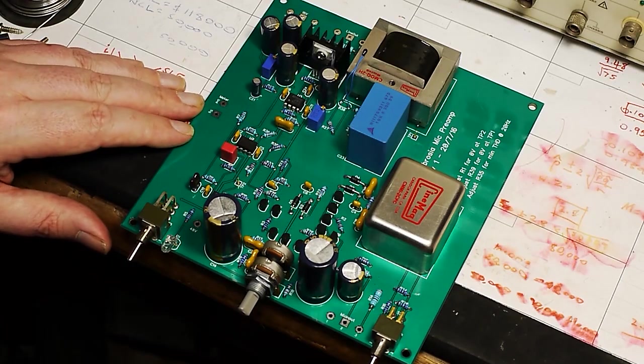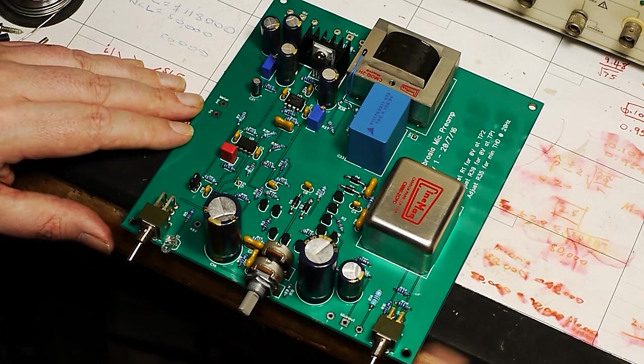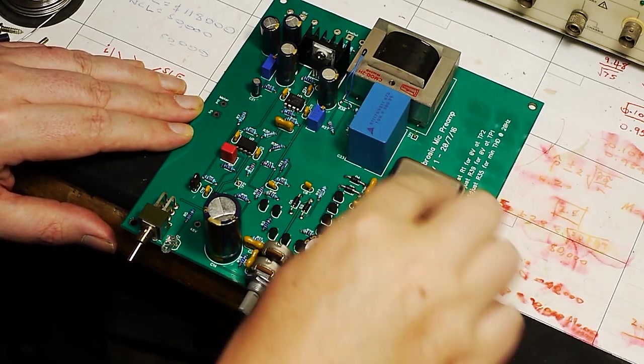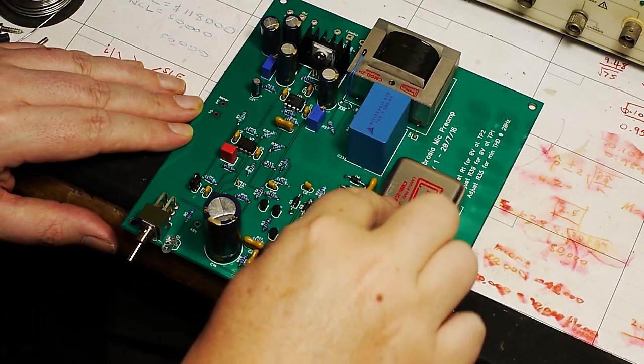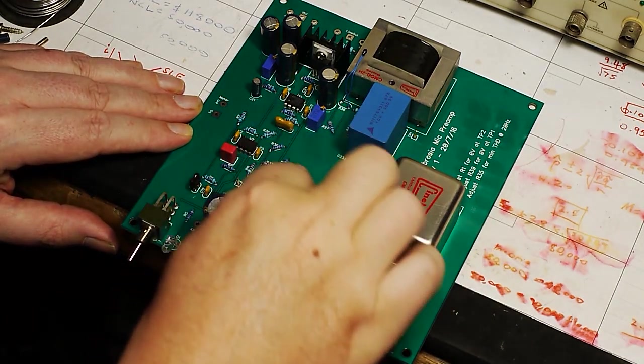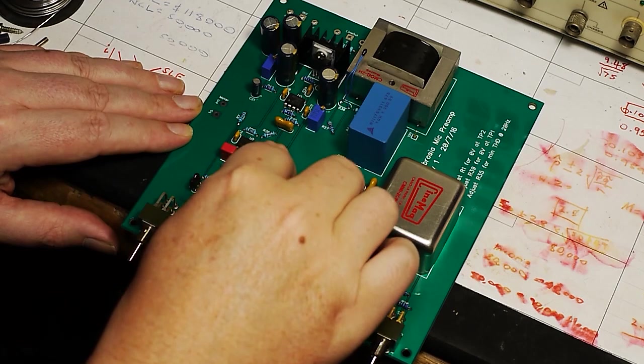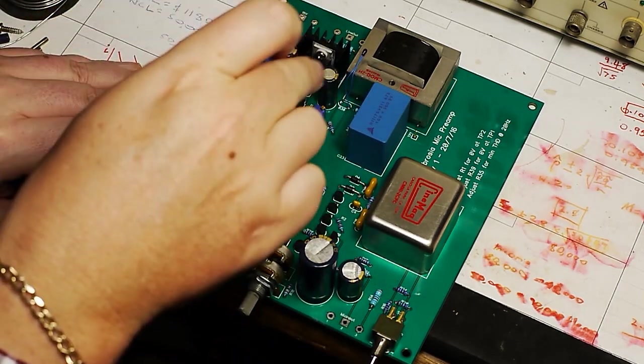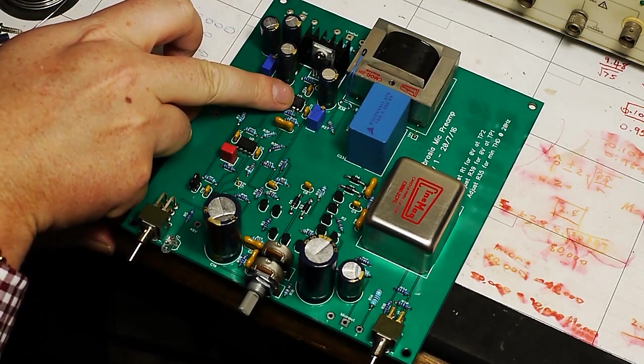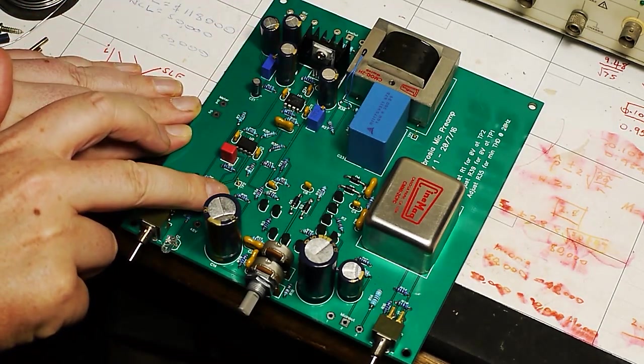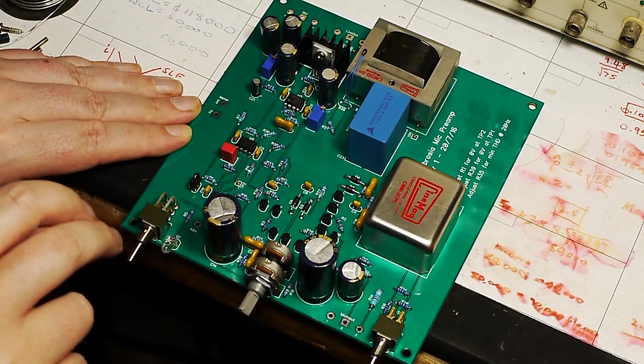We'll start by having a quick look at the board. Input signal comes in here, we have an input transformer, two-to-one step up, a differential amplifier made from discrete transistors, and op-amps. This is the main one that drives the output stage, but it also drives back through here, providing negative feedback.